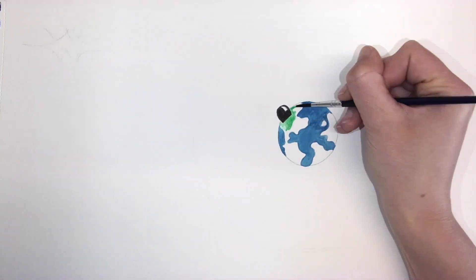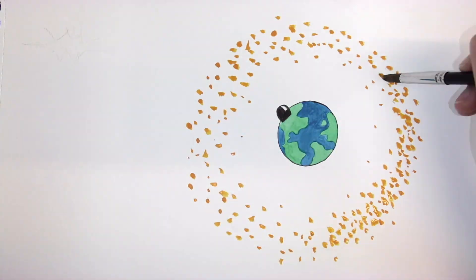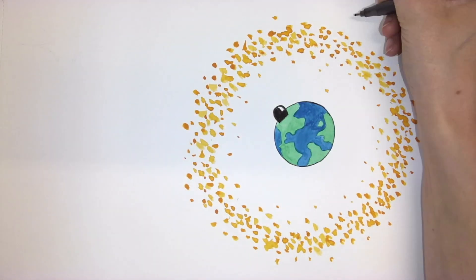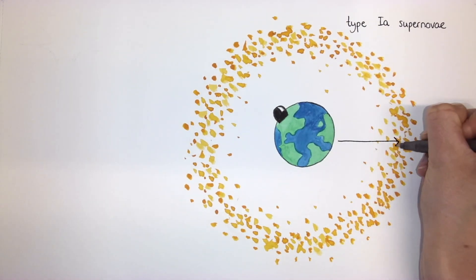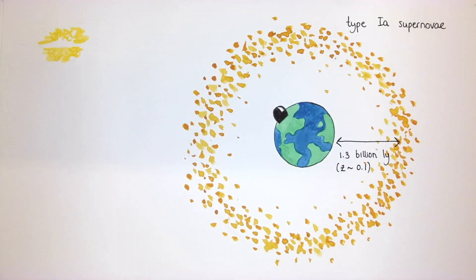Let's sketch a picture of how far away Supernova Zwicky is from us. The Zwicky Transient Facility, or ZTF, can usually discover Type Ia supernovae up to distances of around 1.3 billion light-years, which astronomers refer to as a redshift of 0.1.